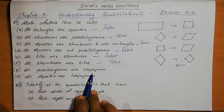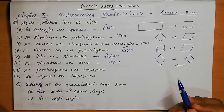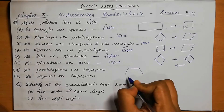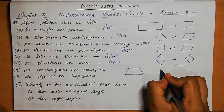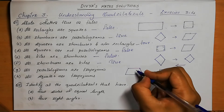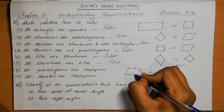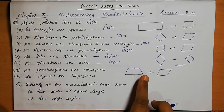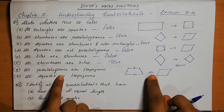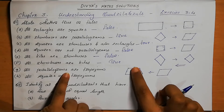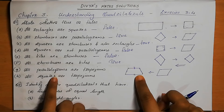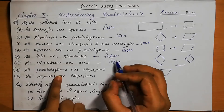All parallelograms are trapezium. A parallelogram means opposite sides are equal and parallel. In a trapezium, two sides are parallel. Since a parallelogram has opposite sides parallel and equal, that condition is satisfied. So all parallelograms are trapezium is a true statement.